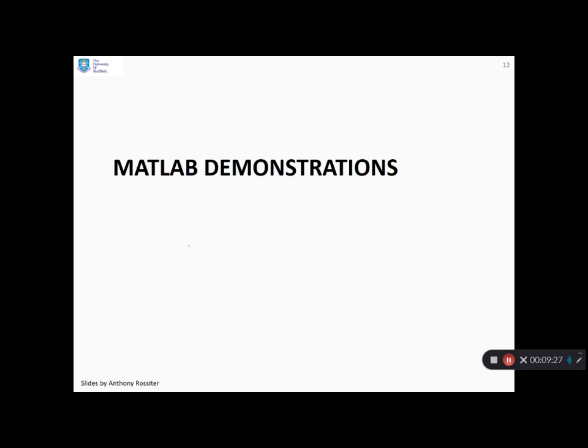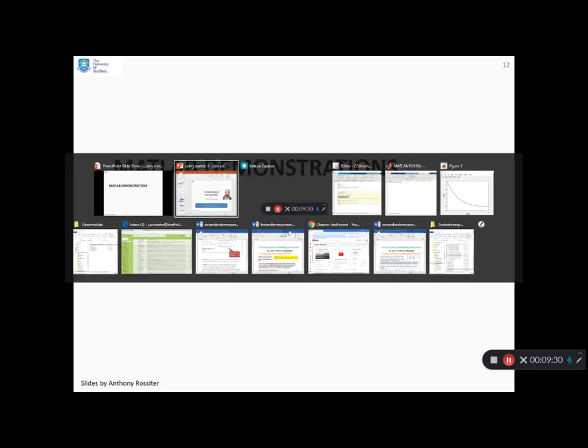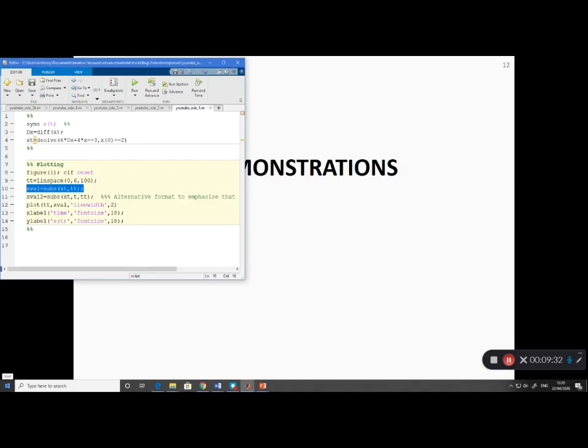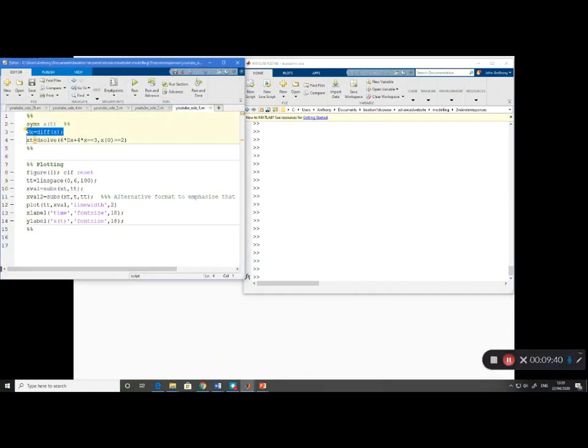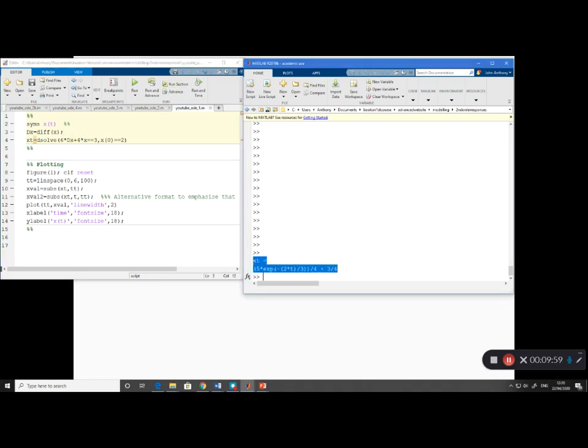OK, so what we want to do now is a few quick MATLAB demonstrations. So if we go to MATLAB, you'll see I've got some commands here. So let's open up the command window. So, you'll see in this top section exactly the commands I've given. First, you define the symbolic variable x of t. Then the symbolic variable dx equals dx. And then, in line 4, there's my use of dsolve. So if I run this section, and you can see, look what it's done. It's given you the solution as expected. x of t is 5e to the minus 2t over 3, all over 4, plus 3 quarters.